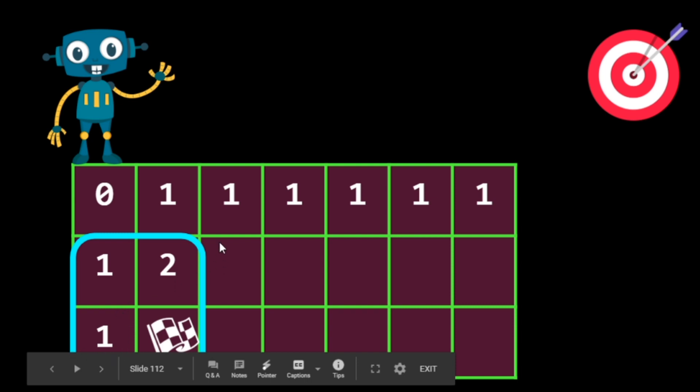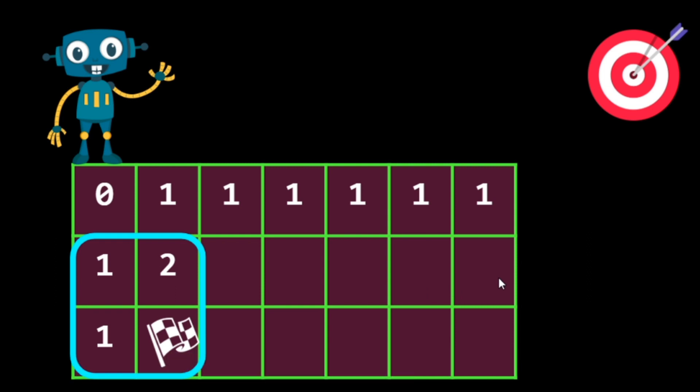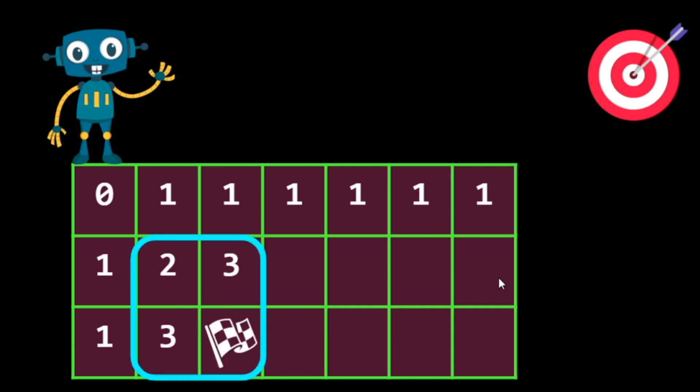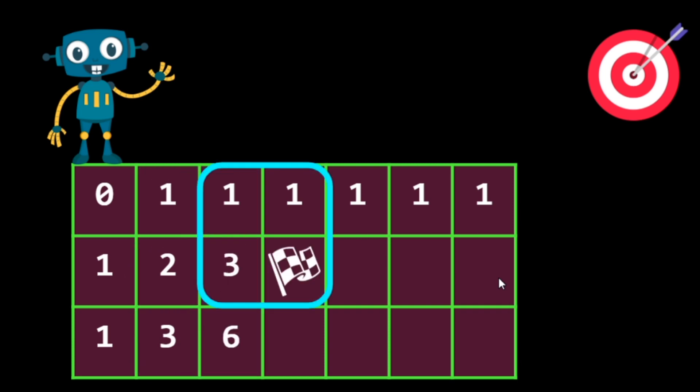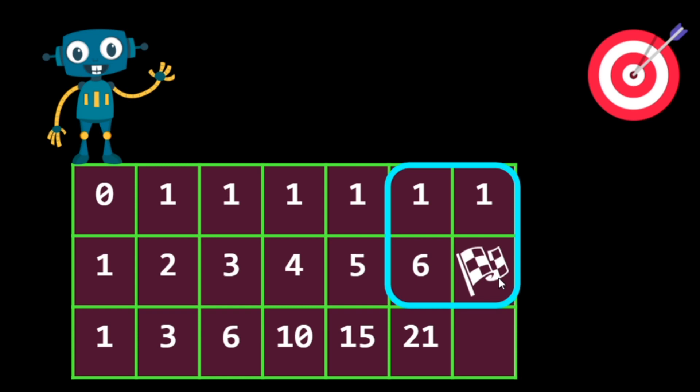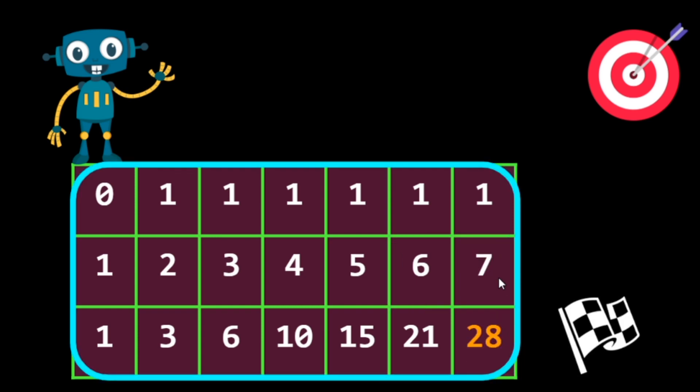So total to go to this cell we will have three ways and that's how we can easily find our ways. So for going to this we will have two plus one, three. For this, three plus three, six. For this, three plus one, four. For this, six plus four, ten ways. And so on and so forth and finally we will get our answer that is 28. So we have total 28 unique ways to come to this cell.